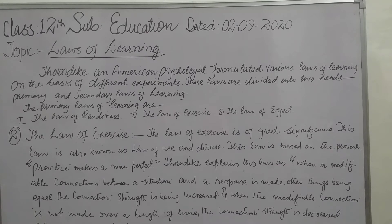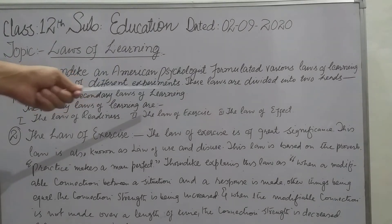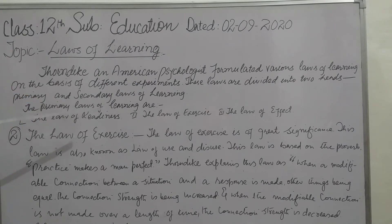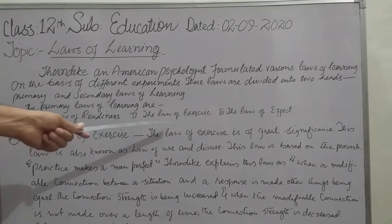As I have already told you, Thorndike, an American psychologist, formulated various laws of learning on the basis of different experiments. These laws are divided into two headers: primary and secondary laws of learning. The primary laws of learning are the law of readiness, law of exercise, and law of effect.